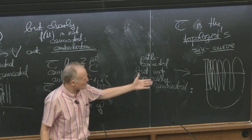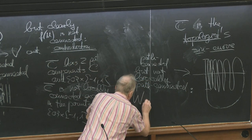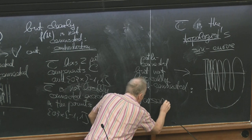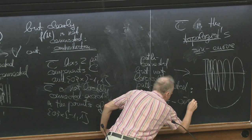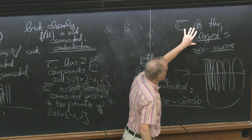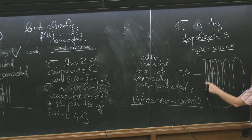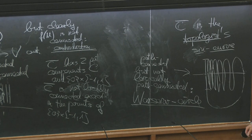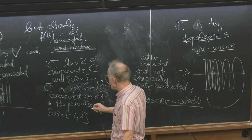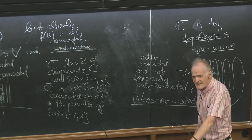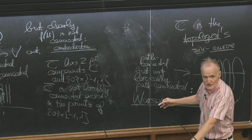This is also a nice example and has a name — it's called the Warsaw Circle. It looks like a strange circle. Warsaw is the capital of Poland. The topological sine curve, and if you go back like this, it's a circle — a very strange circle. It's the Warsaw Circle.